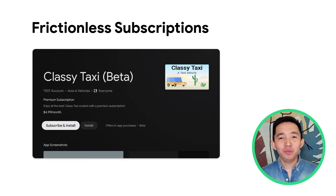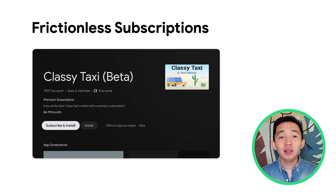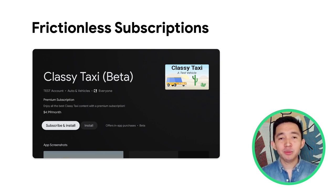One place we see Streamline account linking is frictionless subscriptions on TV. Frictionless subscriptions combines Streamline account linking, Google Play billing, and one tap integration for automatic sign-in into your app. It allows the user to purchase a new subscription, create a new account if needed, link those accounts, and automatically log into the app — all of this with just a few clicks of your remote.